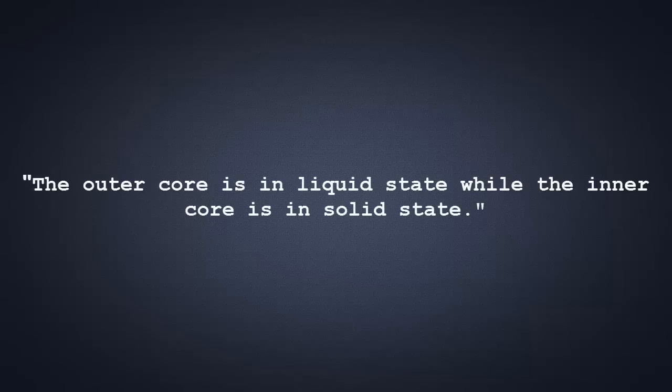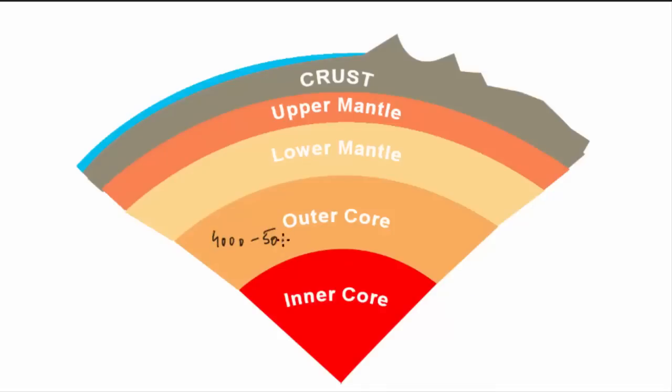Before we start, I want you to watch and hear this question carefully. The outer core is in liquid state, while the inner core is in solid state. Why? I mean the inner core is hotter than the outer core, but the inner core is solid and the outer core is liquid. Why is it like that?